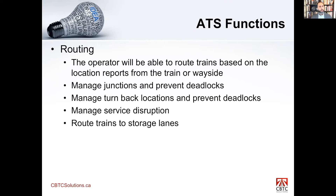Managing service disruptions — every system is going to have disruptions. There will always be a broken train, a passenger needing attention causing a delay, or a switch that has lost detection that trains can't go through. The system has to manage these disruptions. When a disruption occurs, operators may take over manually, but once the disruption is removed, the ATS must bring the system back into equilibrium — separating trains properly and maintaining headway. This is an automatic feature of the ATS.